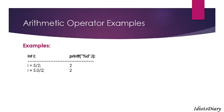In the next expression, 5.0 divided by 2 — the result will be 2.5, but i is unable to hold a floating point value, so it automatically converts to integer type, that is 2. In the next expression, 2 divided by 5 evaluates to 0, because both are integers, so i stores 0. In the next example, 2.0 divided by 5 — the output is 0.4, but i cannot store 0.4, so it is automatically converted to 0.